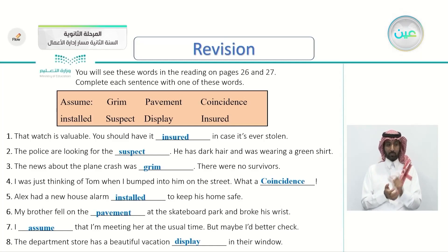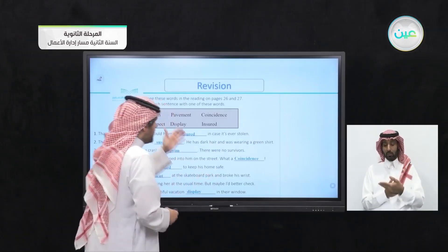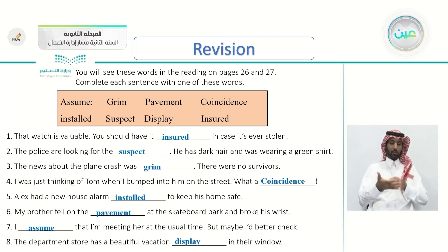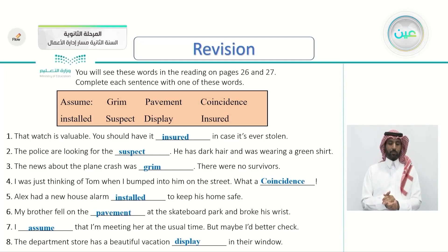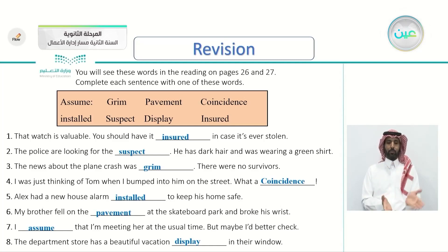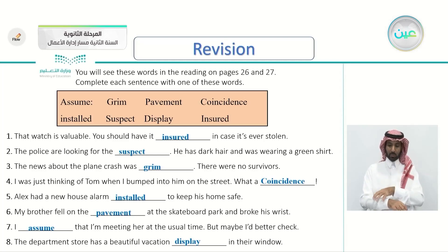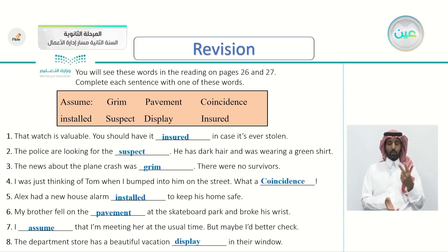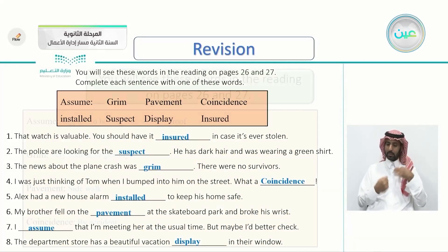You will see these words in the reading on pages 26 and 27, which we will take now. We finished the exercise using these words: assume, grim, pavement, coincidence, installed, suspect, display, and insured. We filled all the gaps. For example, the first one: the watch is valuable — you should have it insured in case it's ever stolen. The second one: the police are looking for the suspect — he has dark hair and was wearing a green shirt.